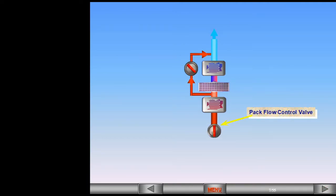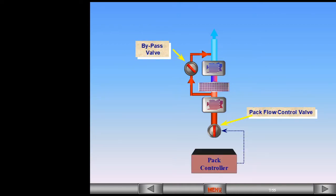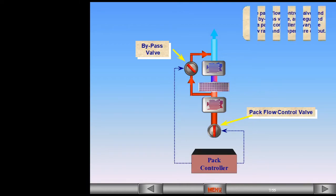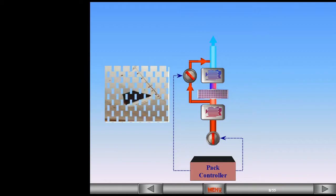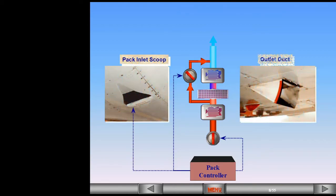The pack flow control valve and the bypass valve are regulated by the pack controller to vary the flow rate and temperature output. The pack controller also controls the inlet scoop and outlet duct to vary the amount of air passing over the heat exchangers.